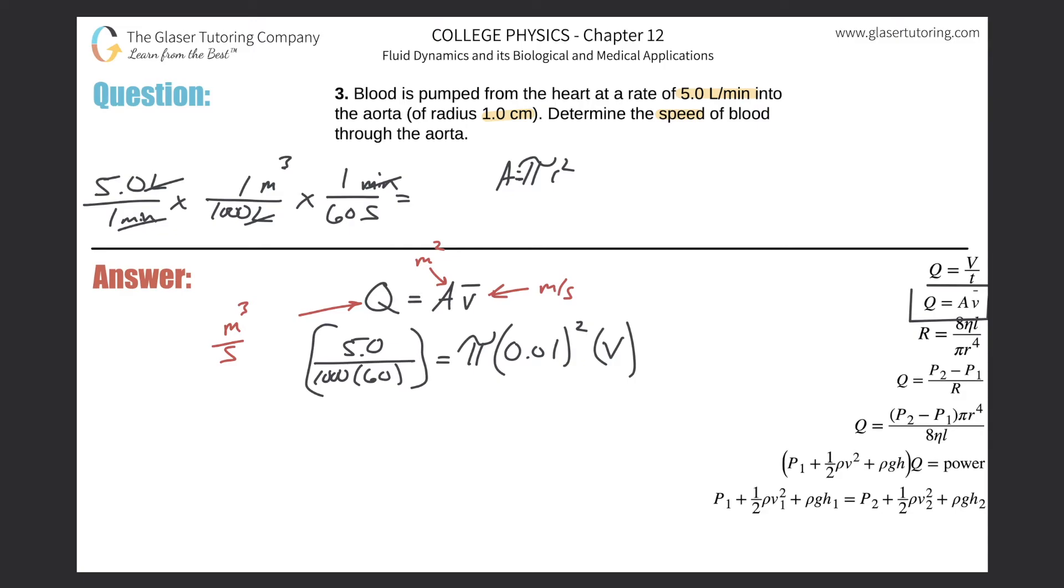by the velocity. We're after the velocity, so we just divide out the pi times 0.01 squared from both sides, and we'll